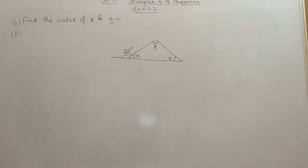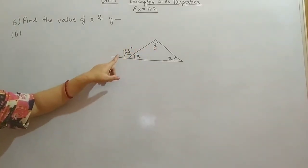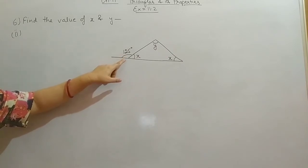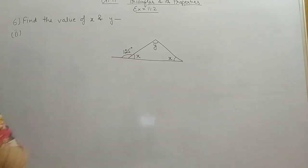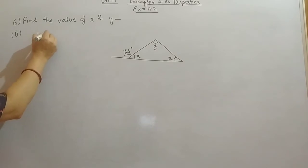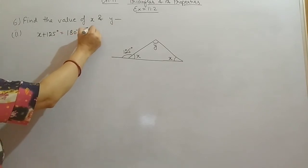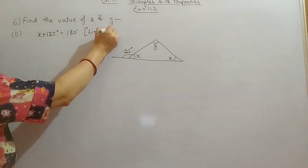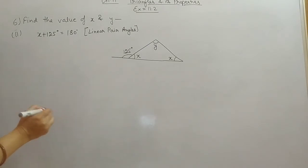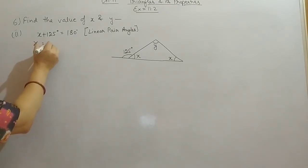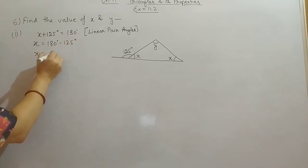Next is the second part of question 6. A figure is given with three internal angles X, X, and Y, and one exterior angle of 125 degrees. First we use the linear pair property: X plus 125 equals 180 degrees. All properties must be mentioned. So X equals 180 minus 125, which is 55 degrees.